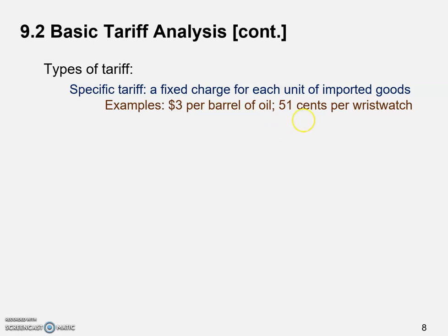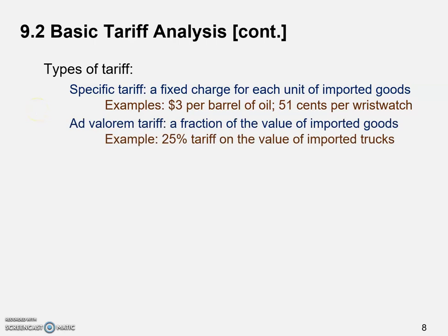It doesn't matter how expensive or cheap the imported goods are. Another example could be 51 cents per wristwatch. That's the first type of tariff. The second type is ad valorem tariffs, which is a fraction of the value of imported goods — it simply means in proportion to its value. A quick example would be a 25% tariff on the value of imported trucks. If the imported trucks cost $100,000 each, the tariff would be 25% of $100,000, so $25,000. In this case, the price matters.